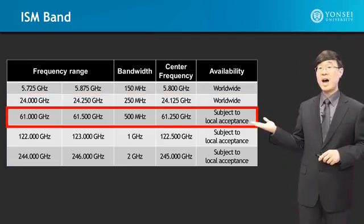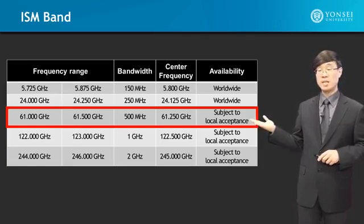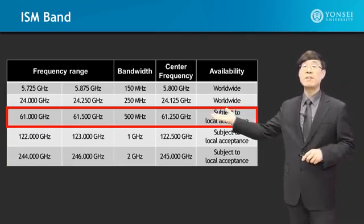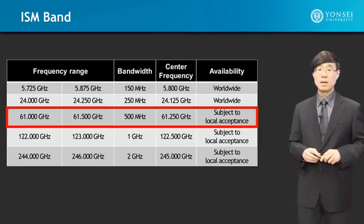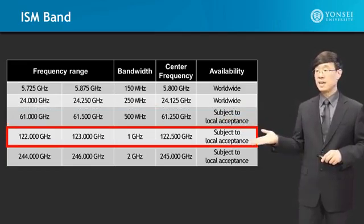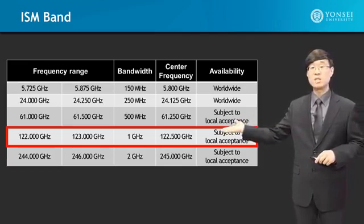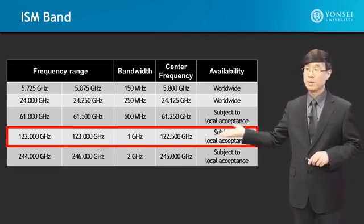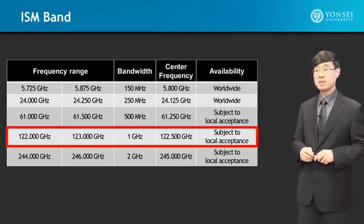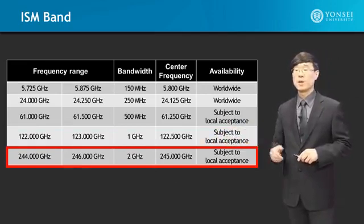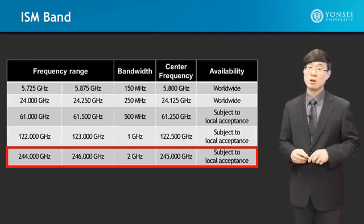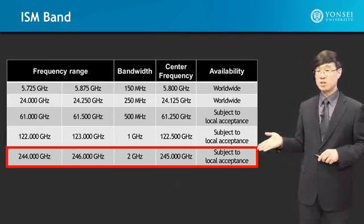At an even higher frequency is the 61 GHz ISM band with a bandwidth of 500 MHz — however, this is limited to local acceptance. Then at the 122 GHz range, the bandwidth reaches 1 GHz, which is truly significantly wide, but also limited to local acceptance. Similarly, the 244 to 246 GHz range has a bandwidth of 2 GHz — also limited to local acceptance. Once again, local acceptance regulations must be followed for these higher frequency bands.